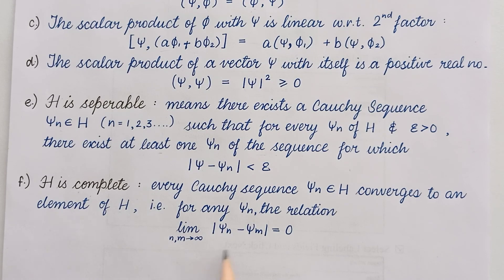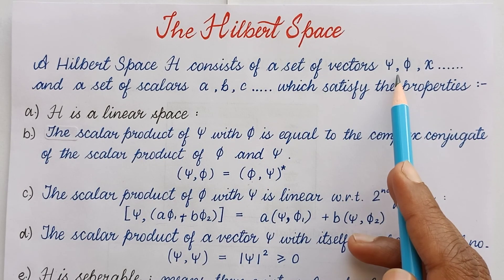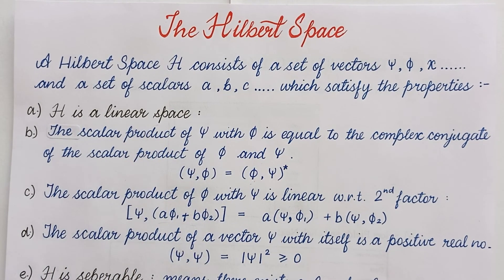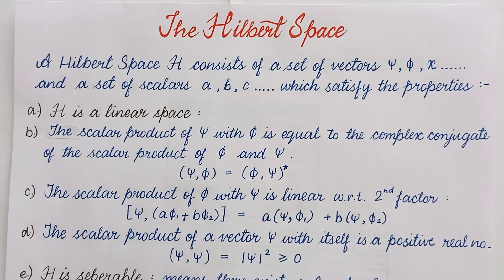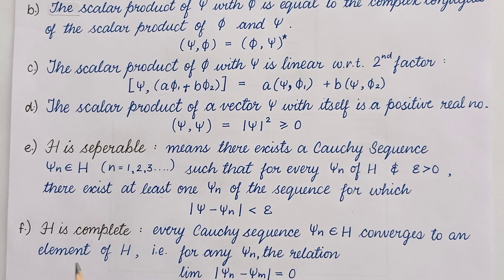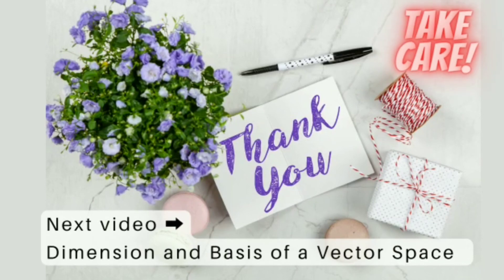Summing it up, we saw that Hilbert space consists of a set of vectors and scalars and has the following properties: H is a linear space; the scalar product of psi and phi gives the complex conjugate as a result; the scalar product of psi and phi is linear with respect to the second factor; the scalar product of vector psi with itself gives a positive real number; H is separable; and H is complete. That's all that defines the Hilbert space. Hope you found this video productive. Thanks for giving your time. Take care. Bye-bye.